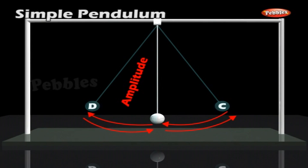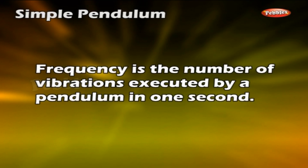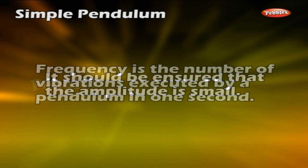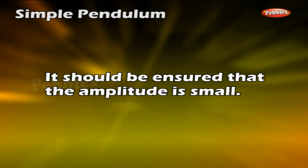The maximum displacement of the bob from its mean position on either side is called amplitude. BD or BC represents the amplitude. Frequency is the number of vibrations executed by a pendulum in one second. It should be ensured that the amplitude is small.